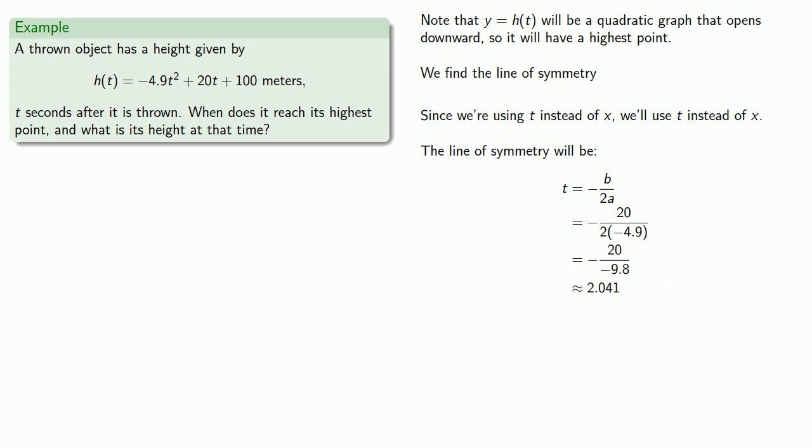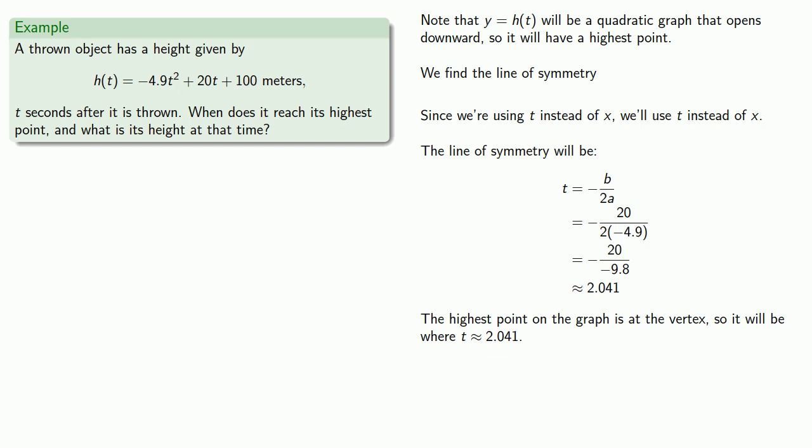Since this graph opens downward, the highest point on the graph is at the vertex, so it will be where t is approximately 2.041. The object will reach its highest point approximately 2.041 seconds after being thrown.